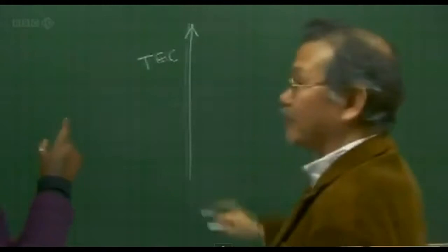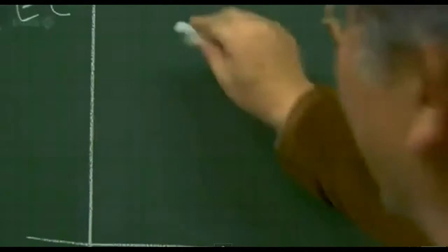TEC, that's the number of electrons in the ionosphere about 300 kilometers up. Yes. Okay. And this is time.